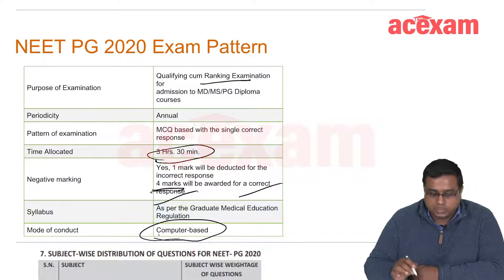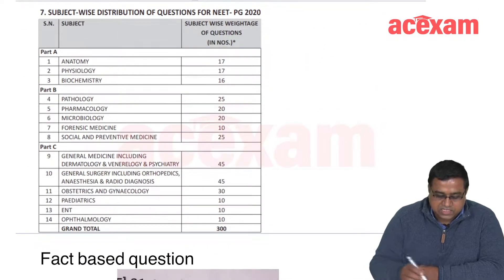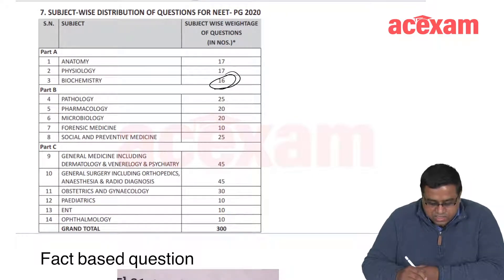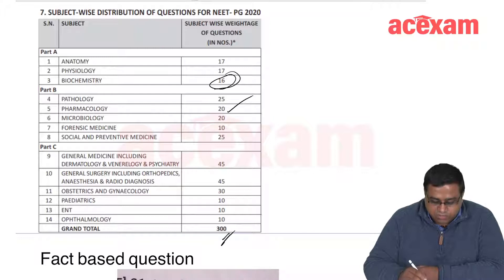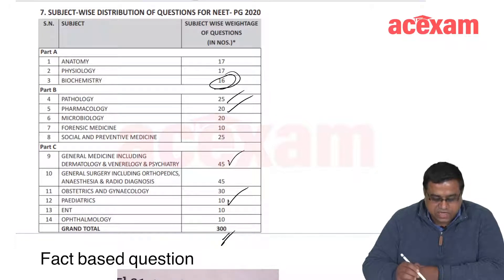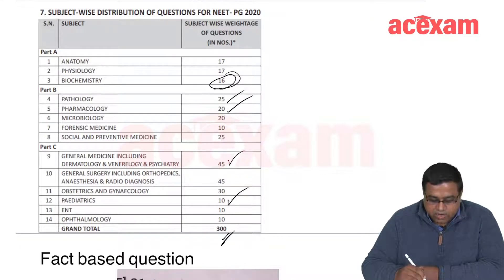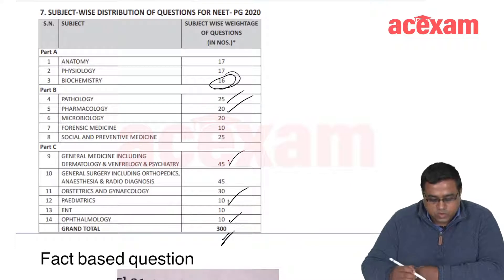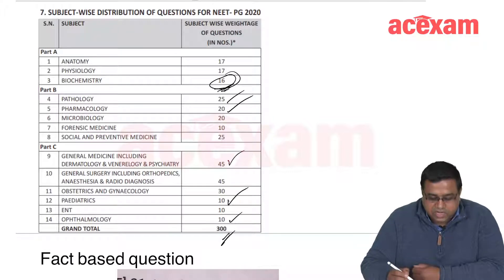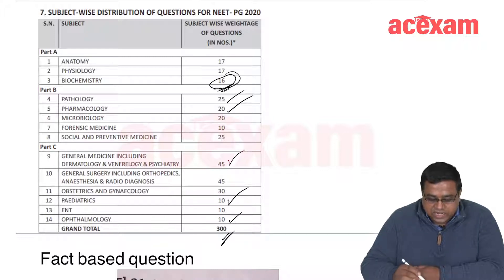The mode of conduct is computer-based. Coming to biochemistry, it covers around 16 marks out of 300. But questions related to biochemistry also appear in pharmacology, pathology, pediatrics, inborn errors of metabolism, medicine syndromes, deficiency diseases, and ENT/ophthalmology — for example, homocystinuria and lens dislocation. So biochemistry is not just for 16 marks. Concentrating on biochemistry will give you an edge in many other subjects too.